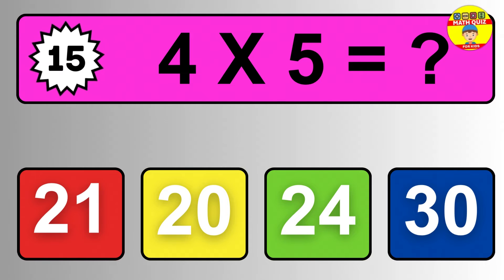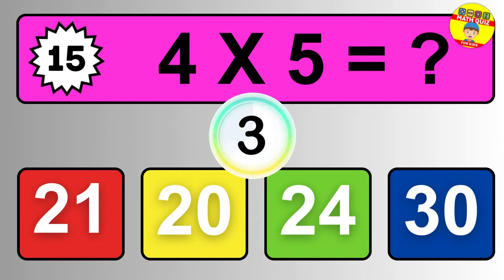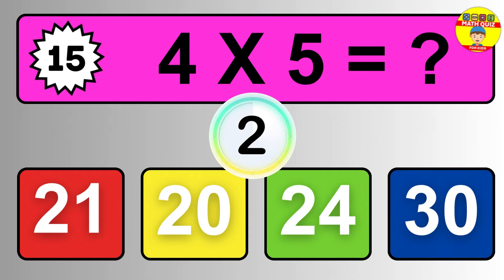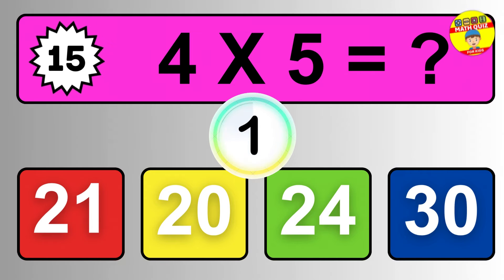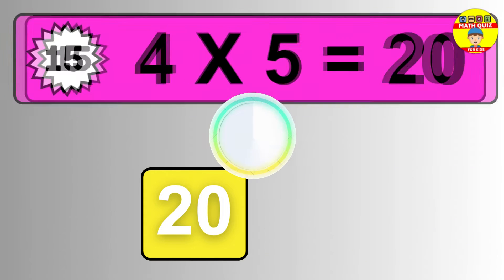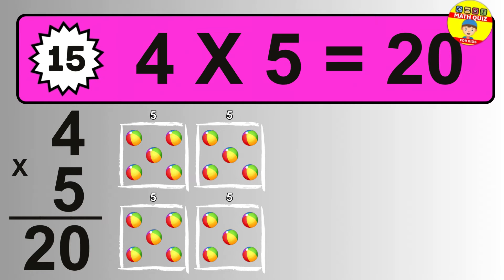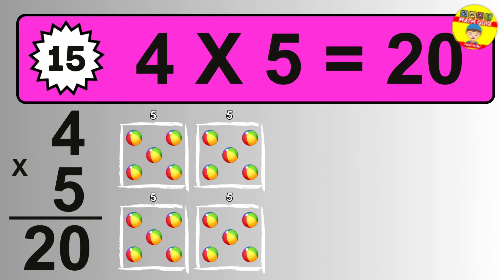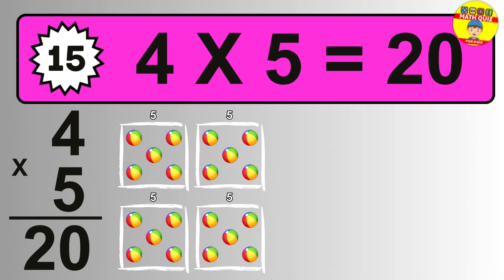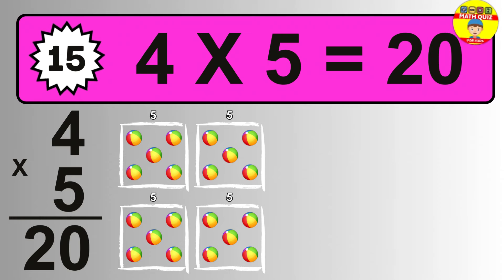Question fifteen. Four times five equals what? The answer is four times five is 20. To calculate, we have four groups with five balls each one. So how many balls do we have? 20 balls.